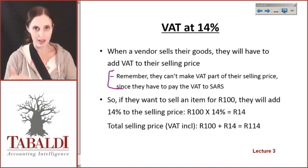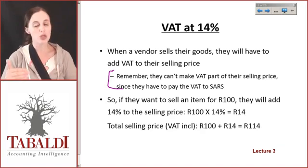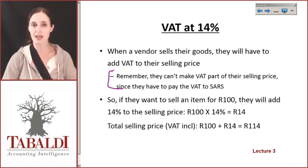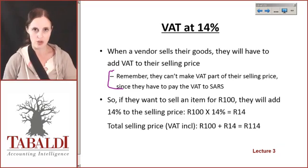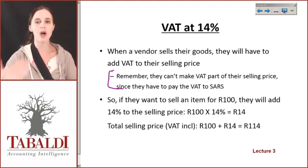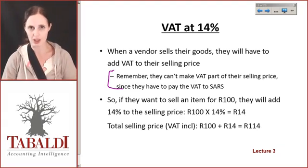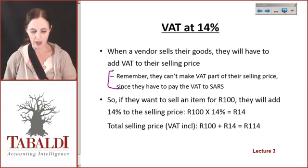So whatever your selling price is, you need to add another 14% to the selling price and then give that 14% to the government as your output VAT. So that is your output VAT.